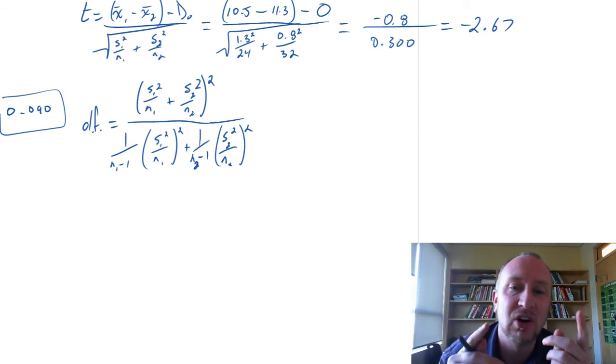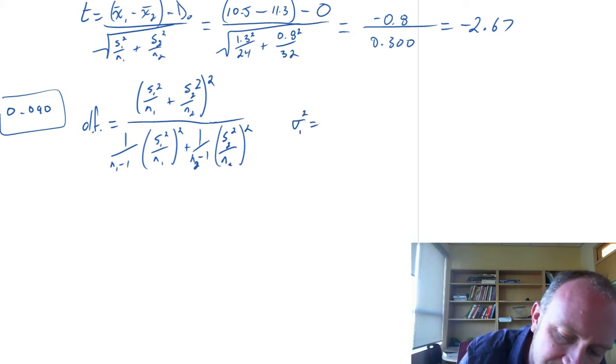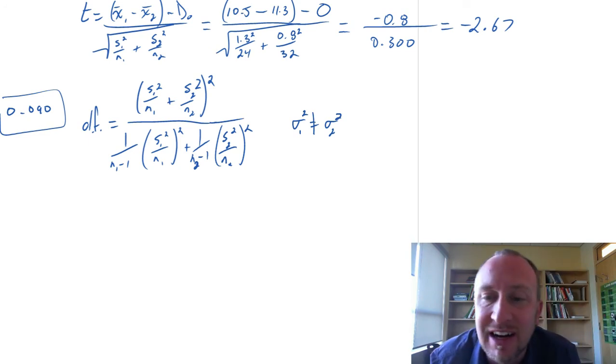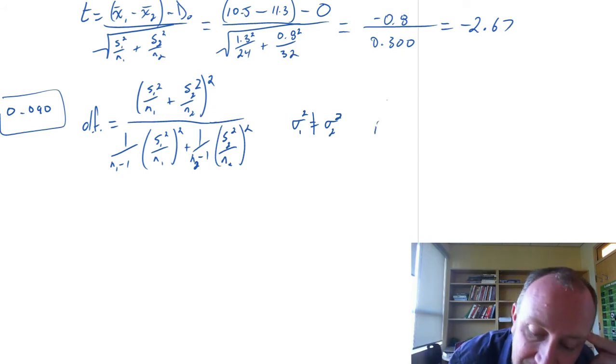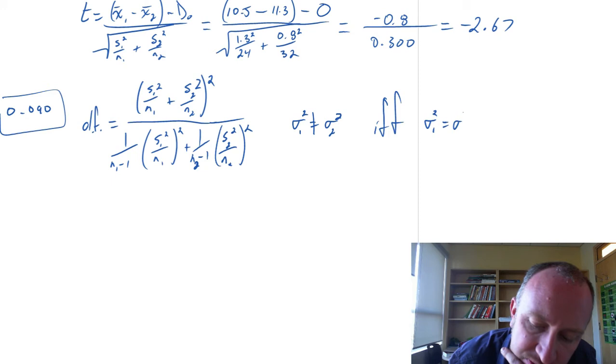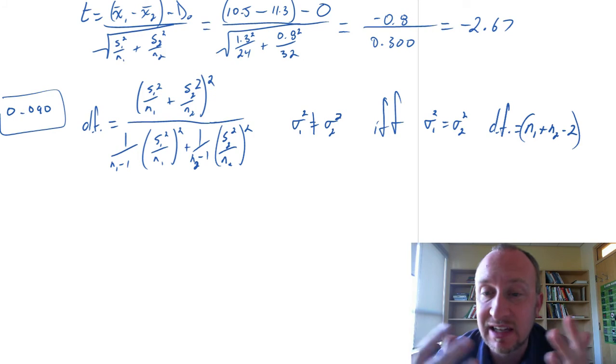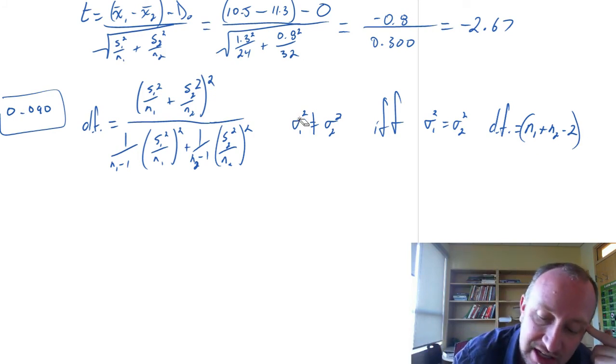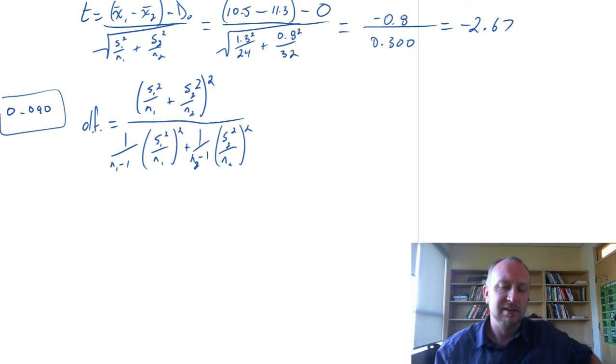Okay so it's a little bit tedious. Now thankfully we don't have to use this formula all the time. We only need this formula when the two variances, the two population variances are assumed to be unequal. Or if we can't assume that they are equal then we have to use this formula. Otherwise the degrees of freedom becomes simply n1 plus n2 minus 2. So a much easier calculation in that case. Now here we're not told anything about the population variances. We're going to assume that they're not equal.